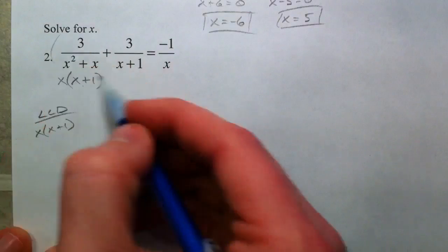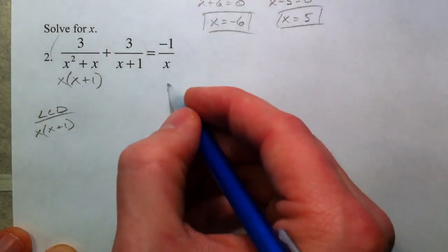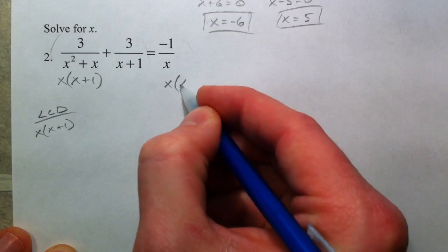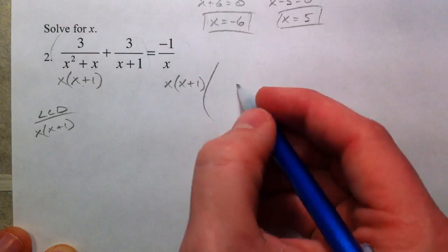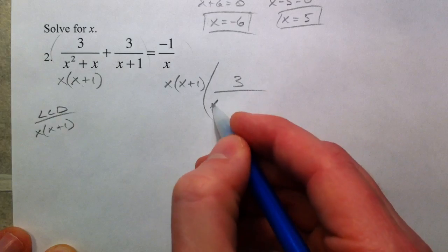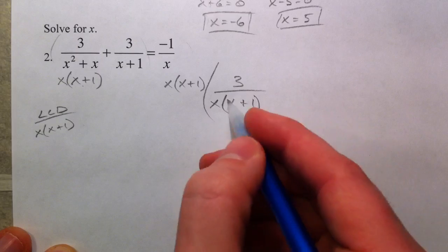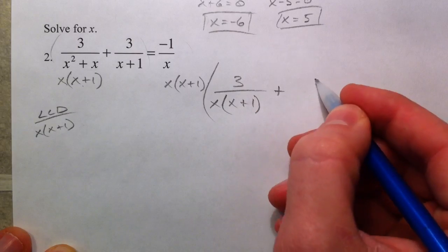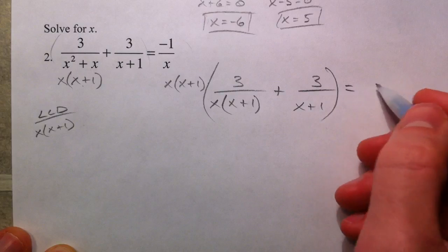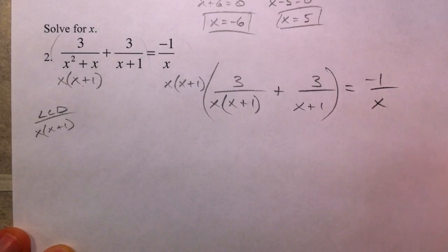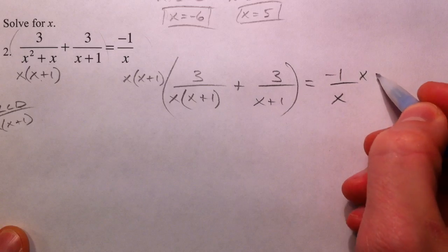That's what we're going to multiply through on the top, on the left and the right. x times x plus 1 gets multiplied by the left-hand side, and I'm going to write that 3 over x squared plus x as x times x plus 1, just in factored form. Plus 3 over x plus 1, that's the left-hand side, and negative 1 over x times x times x plus 1.